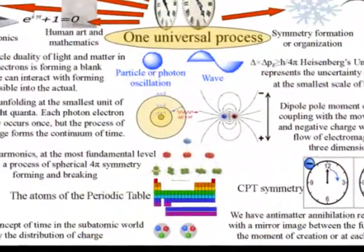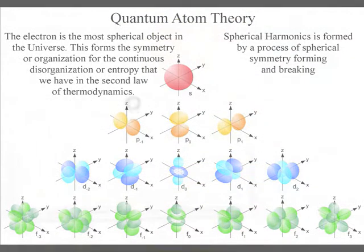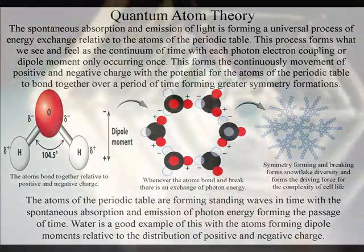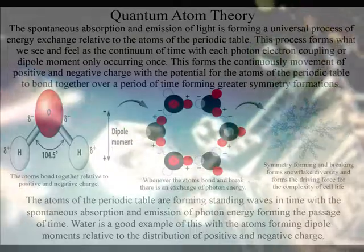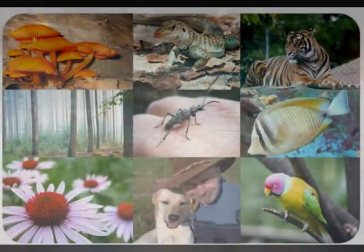This is represented by spherical harmonics on the diagram. Only a process of symmetry forming and breaking would form entropy or disorganization with a built-in potential for ever greater symmetry formation that we see in the great diversity and complexity of life.